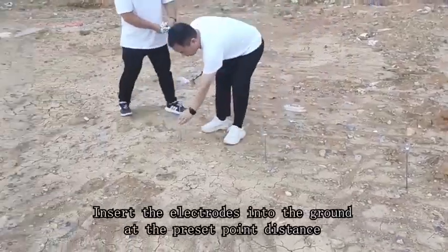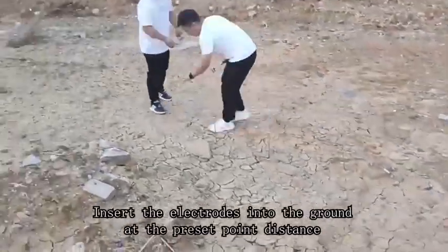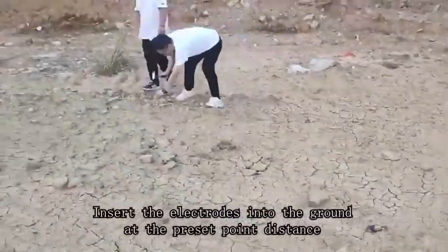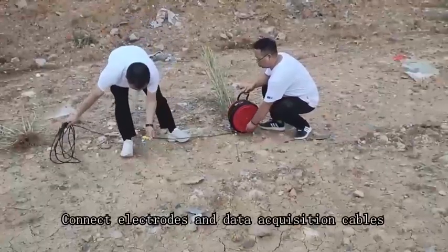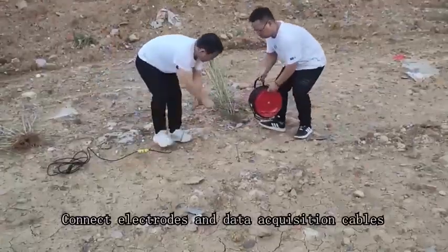Insert the electrodes into the ground at the preset port distance. Connect electrodes and data acquisition cables.